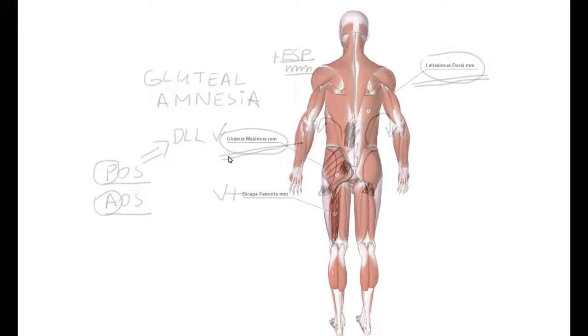Normally, we should have strong gluteus maximus, and biceps femoris shouldn't be the main hip extensor. In this scenario where deep longitudinal line is compensating for posterior oblique system's weakness or underperformance, we will end up with tight lower back muscles, inhibited gluteus maximus muscle, and tight biceps femoris.